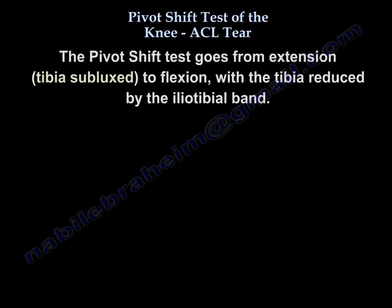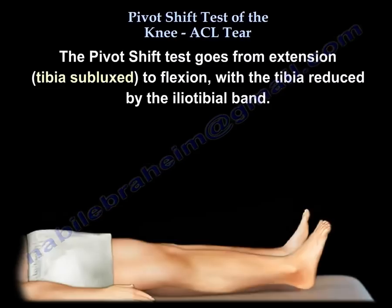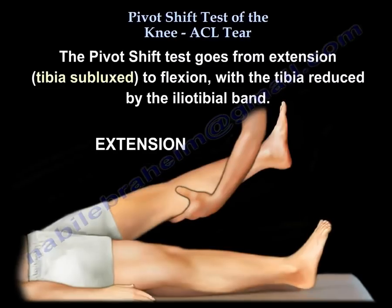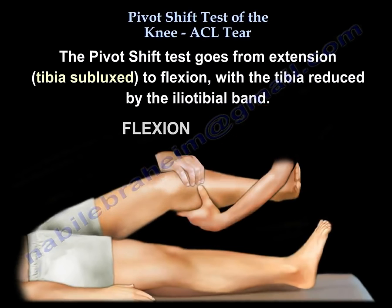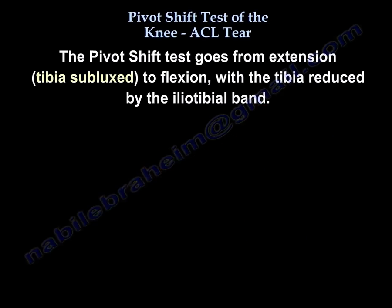The pivot shift test goes from extension, where the tibia is subluxed, to flexion, with the tibia reduced by the iliotibial band.